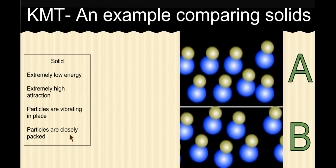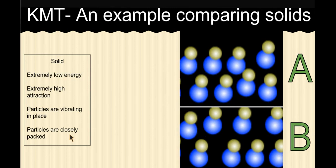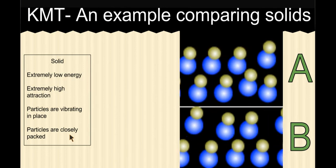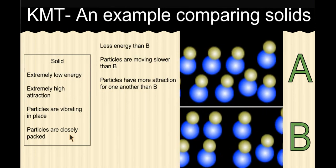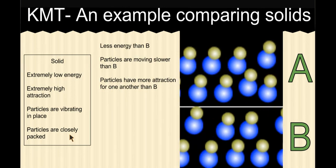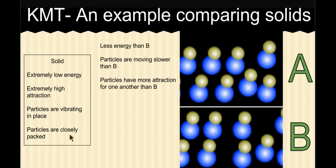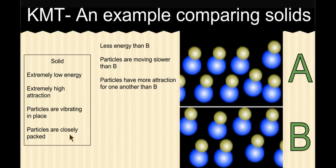Now, we can also contrast A and B. They are different using KMT. Here's what I would say about A. The particles of A are moving slower, and they are moving slower because they have less energy than B. And because they have less energy, they also have more attraction for one another than the particles in B.